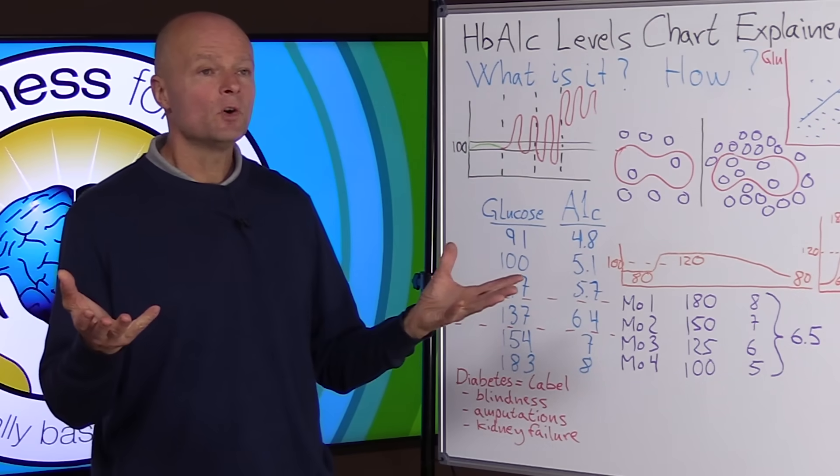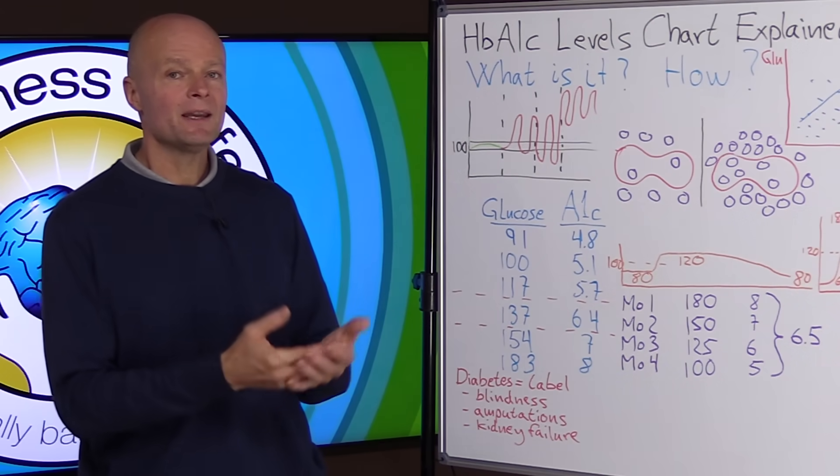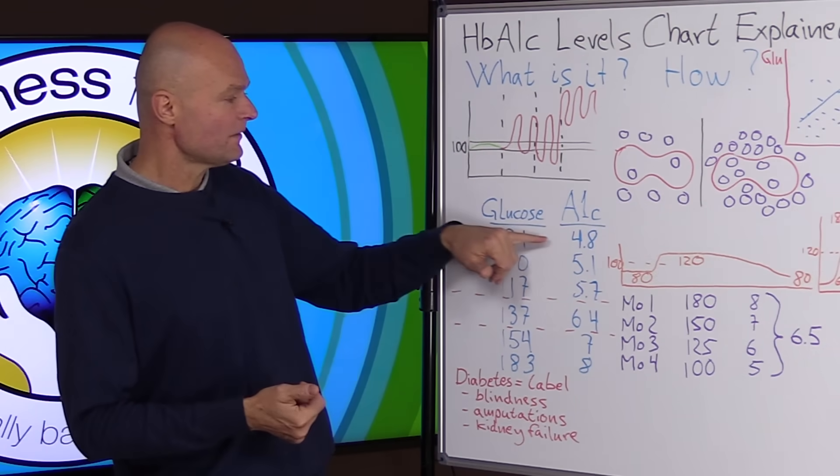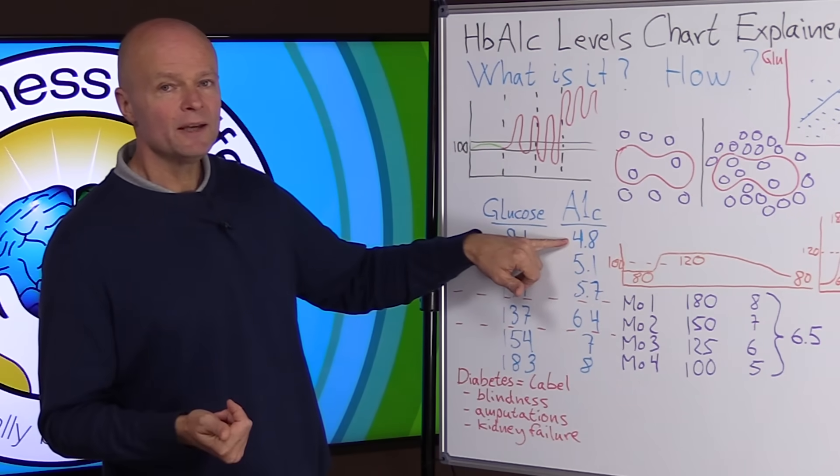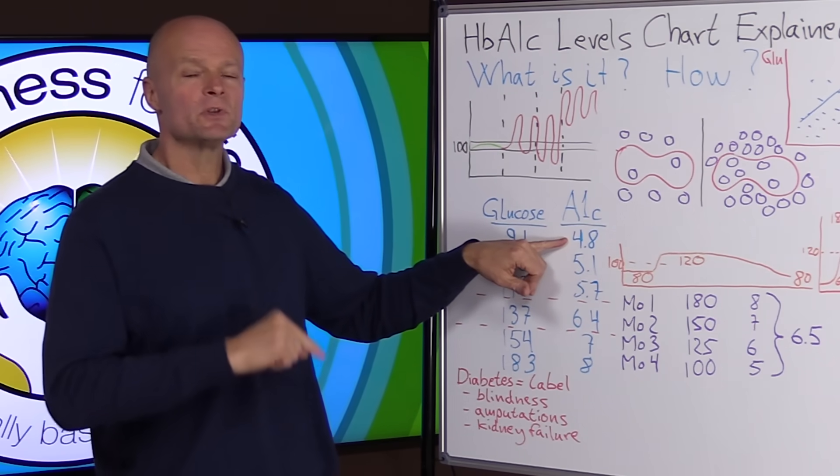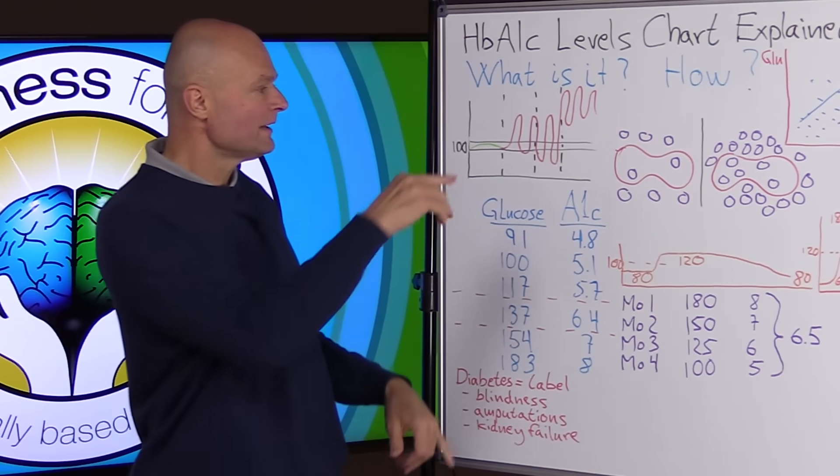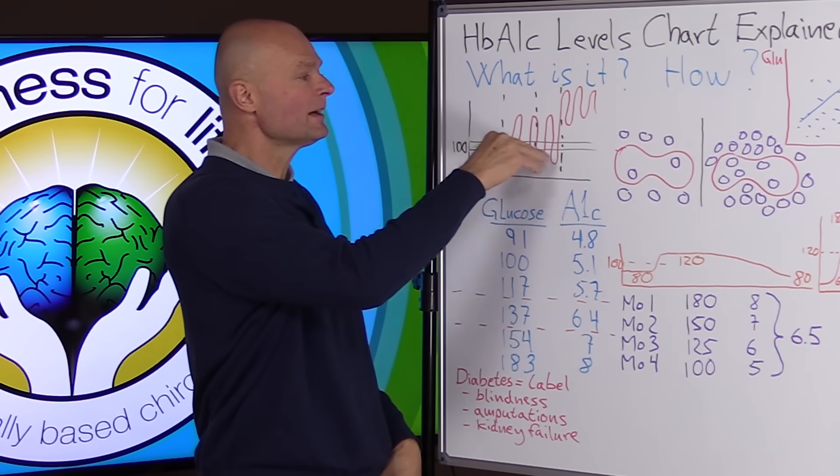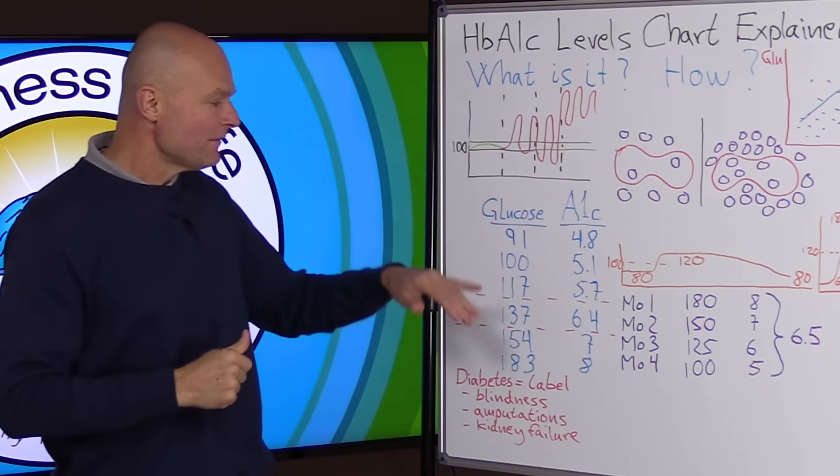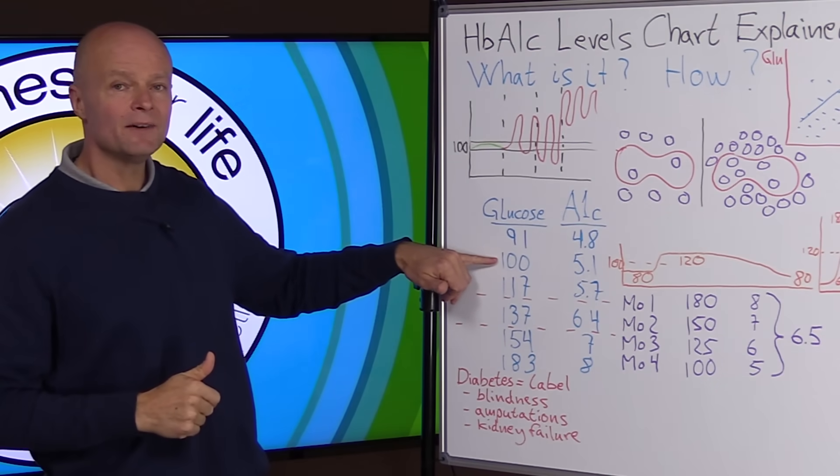So then people say, well, I had my on my last blood test, they measured my glucose and it came back at a 90. So does that mean I have an A1C of 4.8? No, because when they measured the glucose, that means that was your fasting glucose level. They caught it at a certain time and we don't know where on that scale it was.